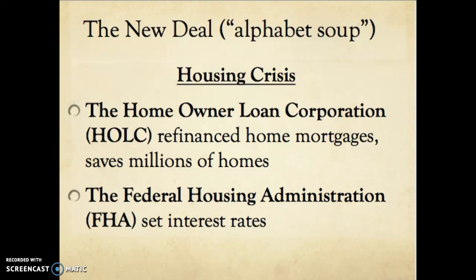The last major issue was the housing crisis. The Home Owner's Loan Corporation refinanced home mortgages and saved millions of people's homes, lowering prices for those who couldn't afford them. The Federal Housing Administration — the FHA — set interest rates and helped people with loans. The FHA still exists today, and people still get FHA loans to purchase homes. Chances are if your parents bought a home, they probably have an FHA loan.